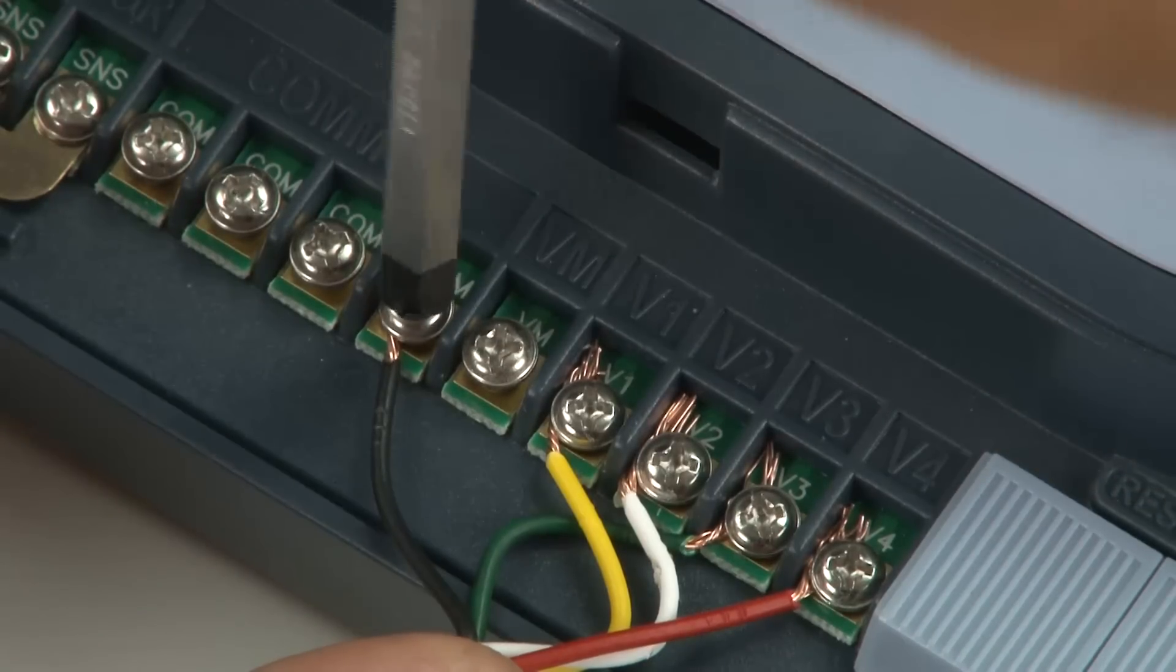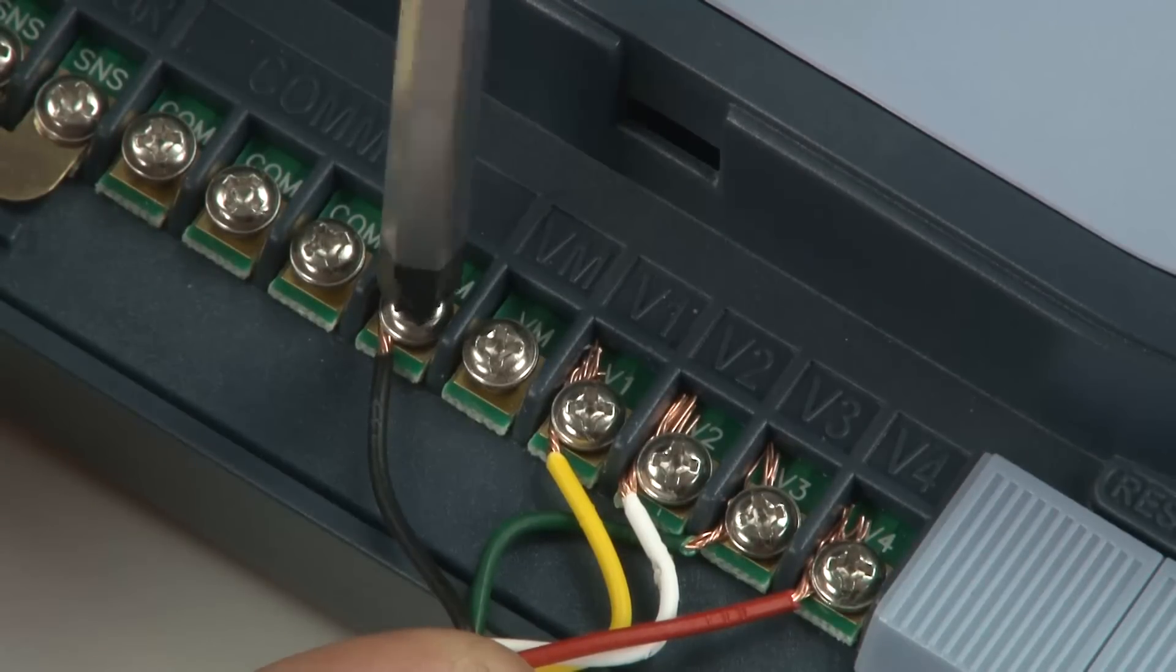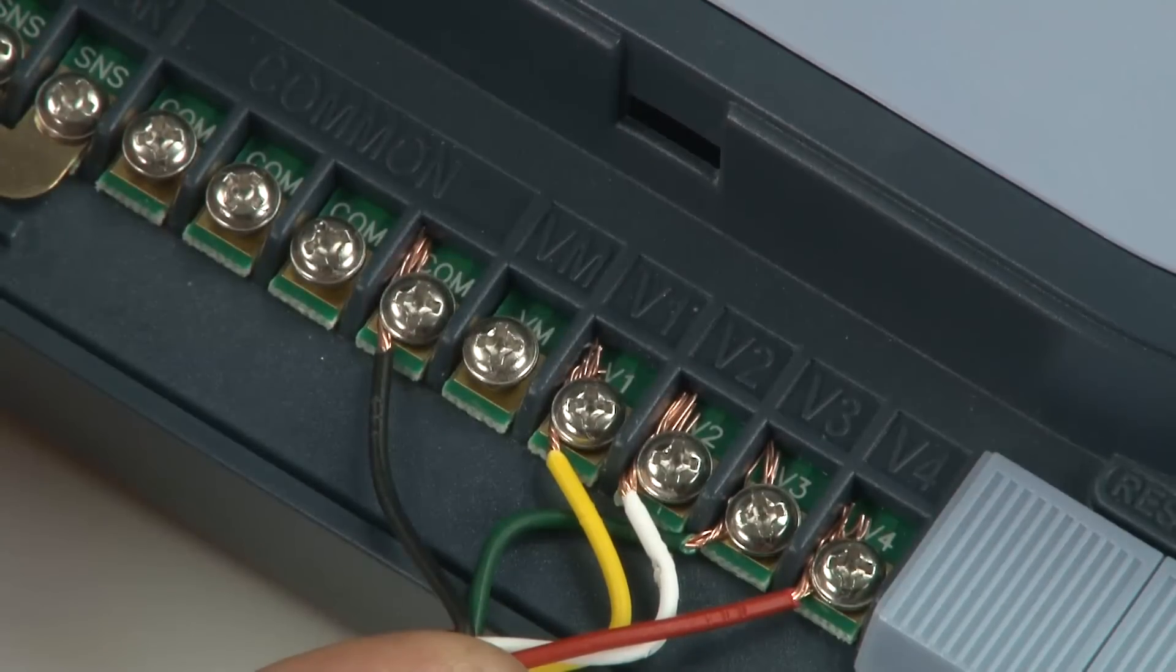The common position on irrigation controllers is often marked with the letter C, the letters C-O-M or the word common. Refer to your controller instructions for further information on connections.